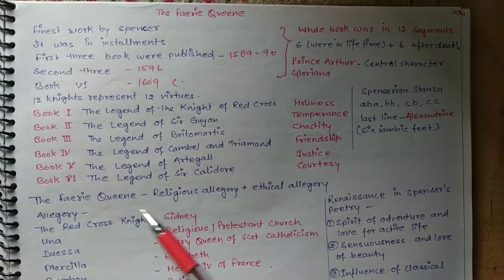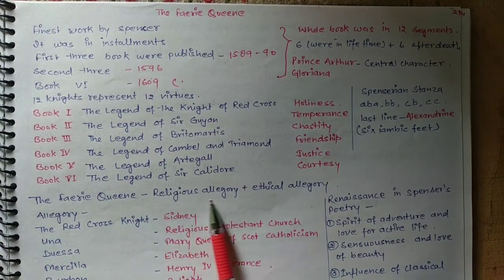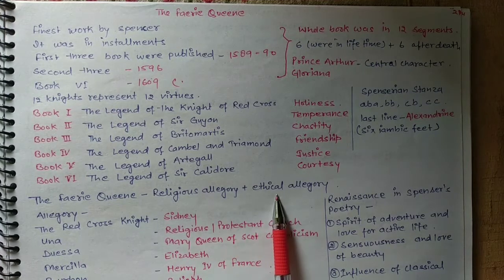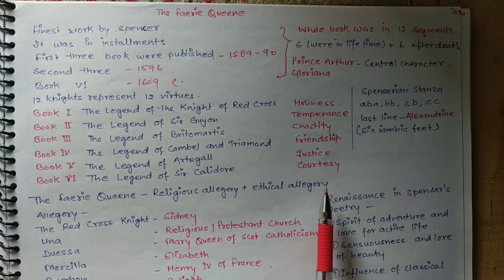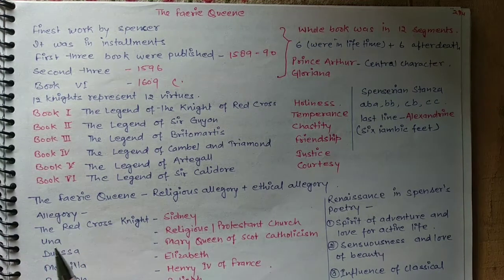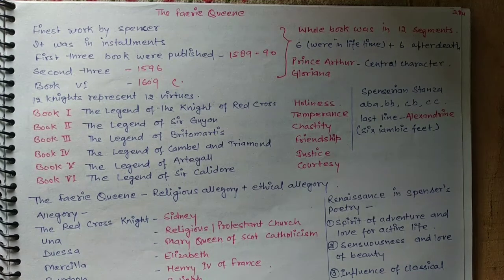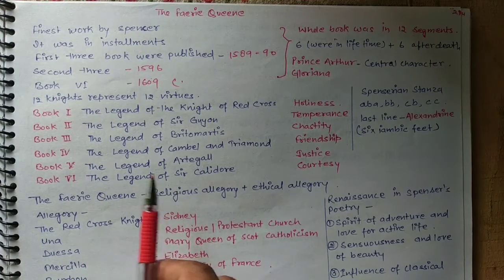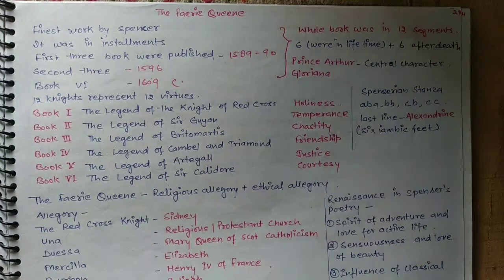The Faerie Queene is a religious allegory and an ethical allegory — remember this. Allegory is the representation of an idea or a person; it shows and represents some ideas.